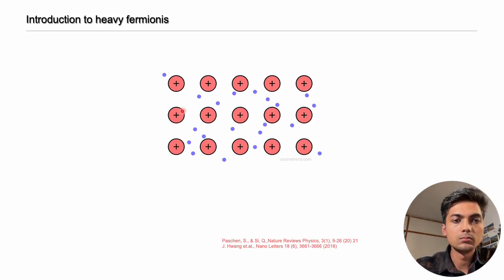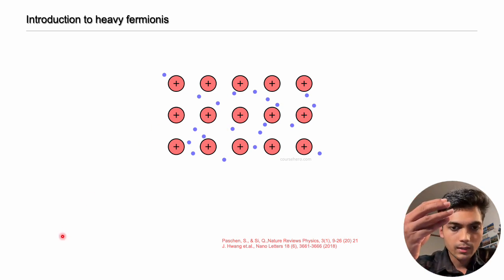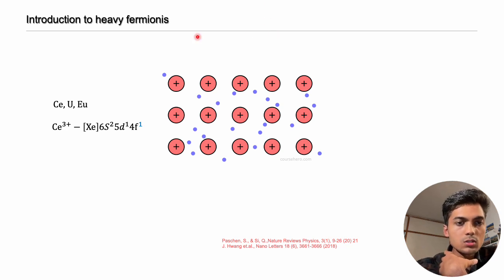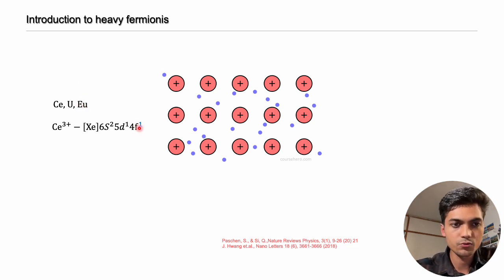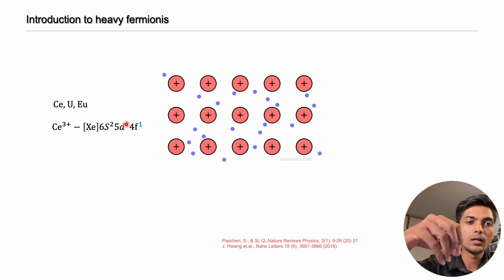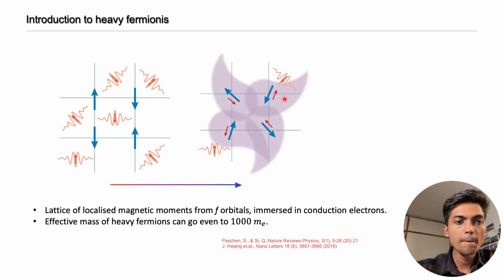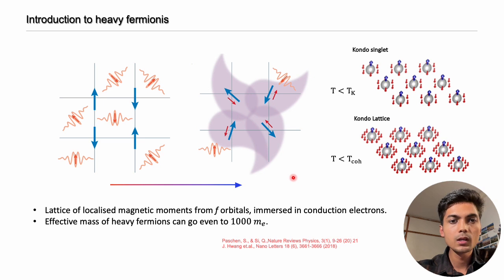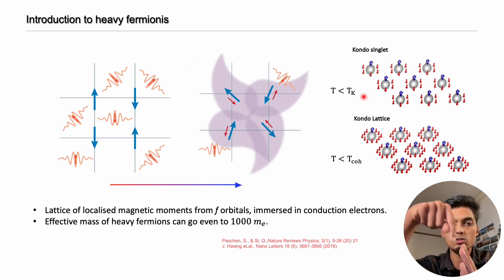To start, let us imagine a lattice with ions in a sea of conduction electrons. Now imagine these ions are made up of heavy elements such as cerium, uranium, or europium, which have f orbitals with a free electron. This f electron is embedded in another electronic system. Now you have these f electrons and the itinerant conduction electrons. At a particular temperature called the Kondo temperature, some electrons start to bond or hybridize with the local moments to form a singlet state called the Kondo singlet.